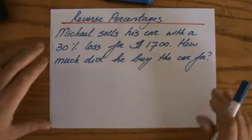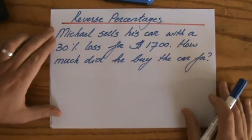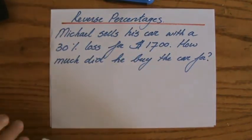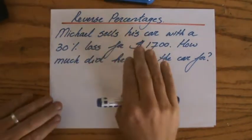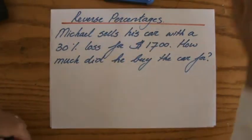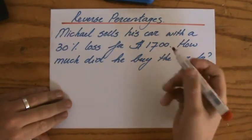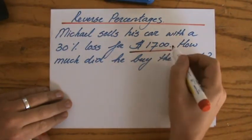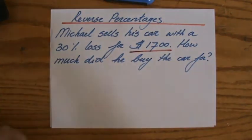Another question involving reverse percentages: Michael sells his car with a 30% loss for $1700. How much did he buy the car for originally? What I tried to explain in my previous video